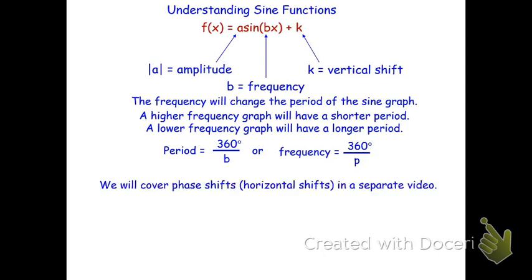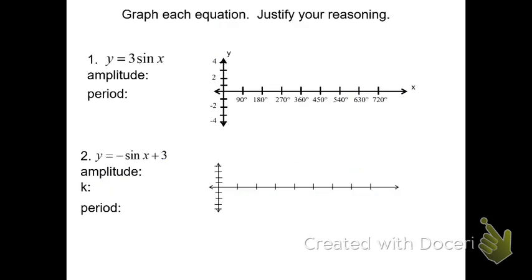Phase shifts or horizontal shifts will be covered in a separate video. Let's look at a couple of examples of sine graphs. We're going to graph these two equations: y = 3·sin(x) and y = -sin(x) + 3. For the first one, y = 3·sin(x), the amplitude is 3.